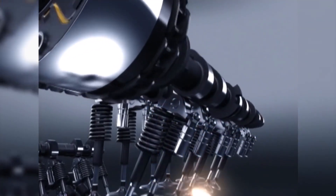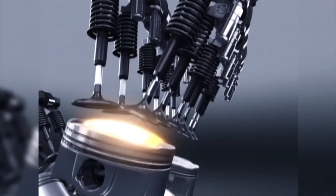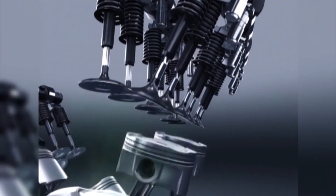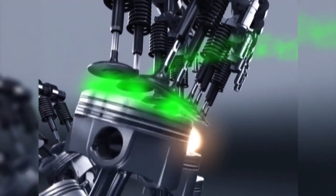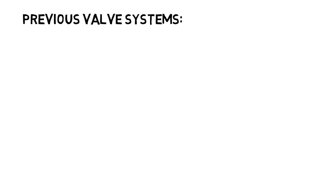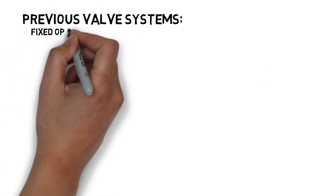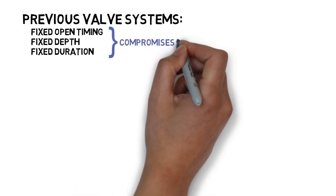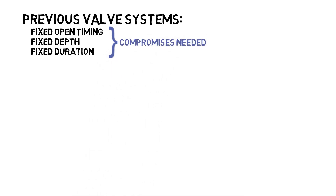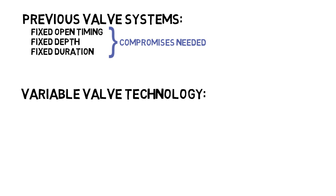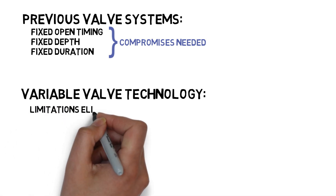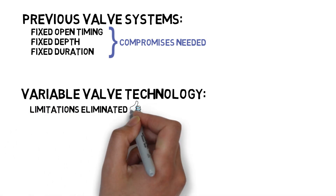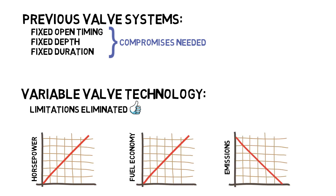Internal combustion engines require intake and exhaust valves to allow air fuel into the cylinder and later eject the burned gases out to the exhaust manifold. Years ago, engine valves had a fixed opening timing, depth amount, and duration. The drawback was that not all engine conditions require the same valve settings, so compromises had to be made across all the operating range. Nowadays, with variable valve technology, this limitation has been eliminated, resulting in overall improvement in horsepower, fuel economy, and emissions.